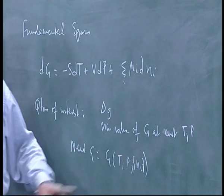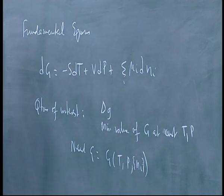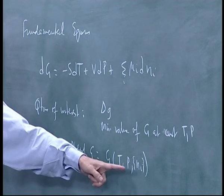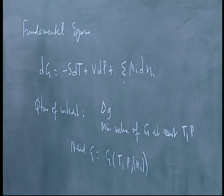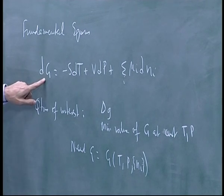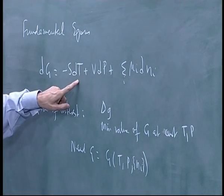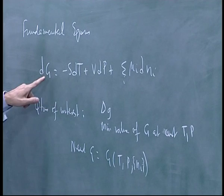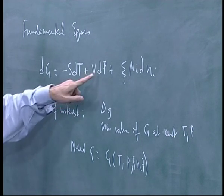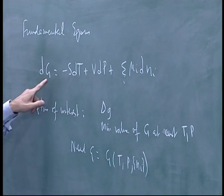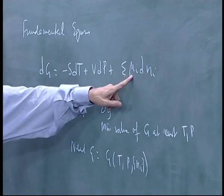Usually you get these relationships through Maxwell relations — you find out how G depends on T and various quantities. So you have ∂G/∂T = −S, ∂G/∂P = V, and ∂G/∂nᵢ = μᵢ.